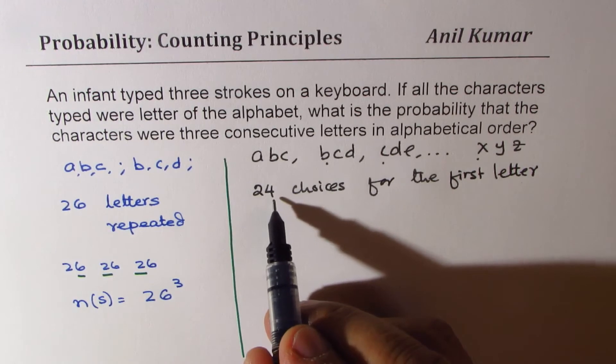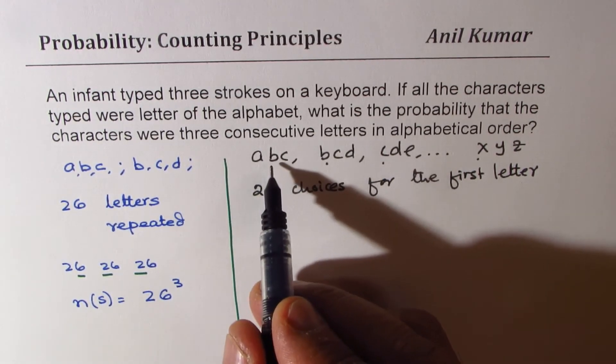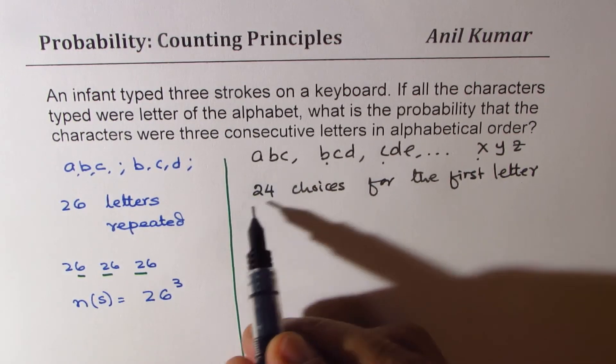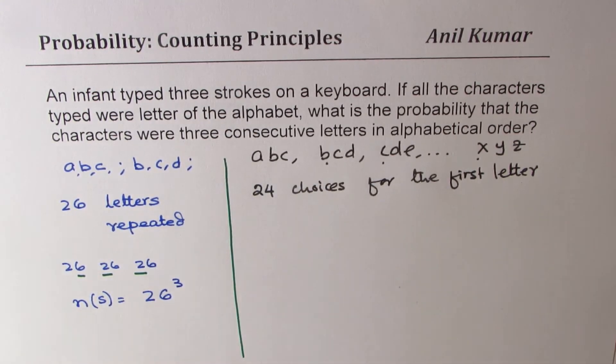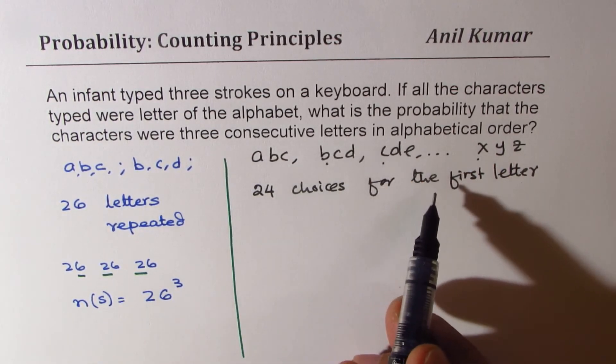Now, after the first letter, you have to get the next two. So it's 1, 1, right? You have to get one out of rest, one out of rest. So basically, you have only 24 choices to get them in order.